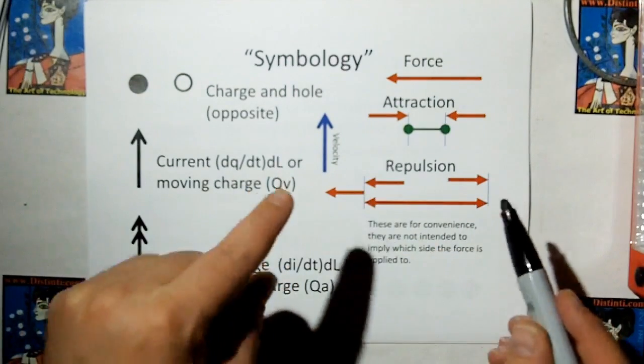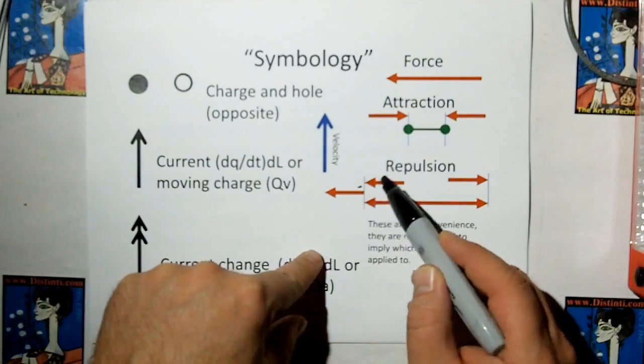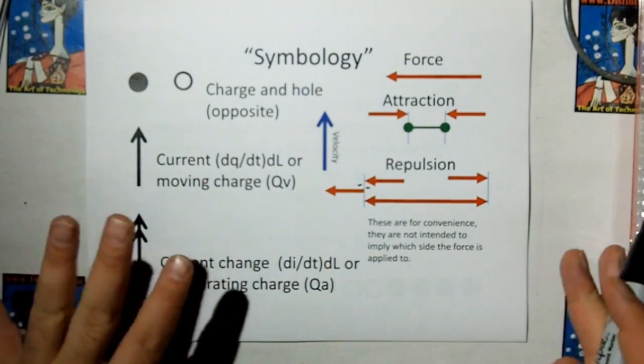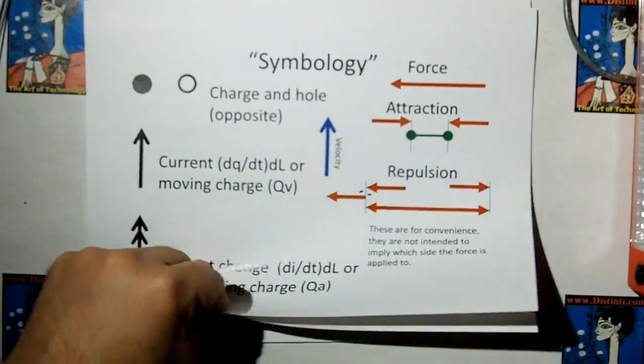And repulsion we're going to show arrows on the inside pushing out or one solid arrow pushing out. Like I said whether the force is being applied to this side or this side, it makes no difference. We're just choosing one type of arrow or the other based on the convenience of how to draw it.